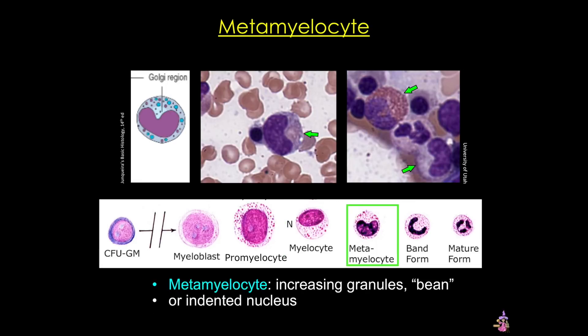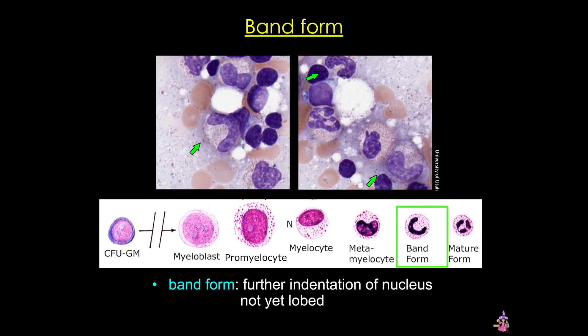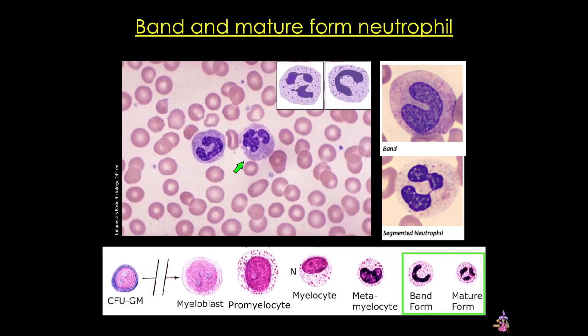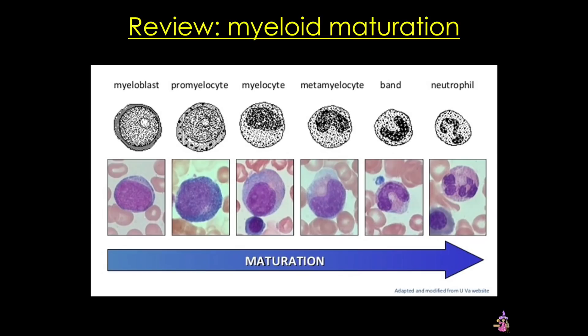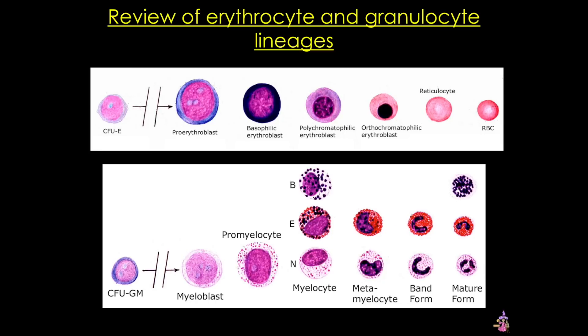The metamyelocyte has increasing numbers of granules and a characteristic bean-shaped or indented nucleus that is off-center. The band form has a characteristic U-shaped nucleus. And finally, in these images you can appreciate seeing a band form neutrophil alongside the mature, more lobed form. The next two slides are simply summaries of the granulocyte lineage and a comparison of the two lineages for you to review later.